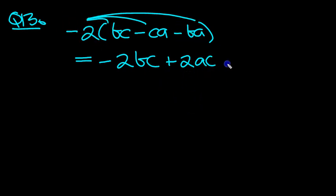And then the last term is another minus times a minus, which is a plus. And we've got two, instead of BA, I'm going to write 2AB.